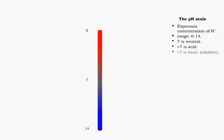The pH scale expresses the concentration of hydrogen ions in solution. This scale ranges from 0 to 14. A pH value of 7 is neutral. Any value lower than 7 is acidic and any value greater than 7 is basic or alkaline.